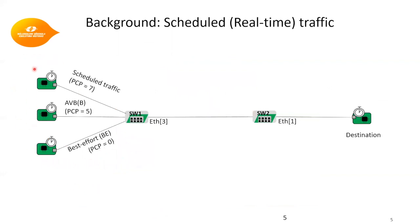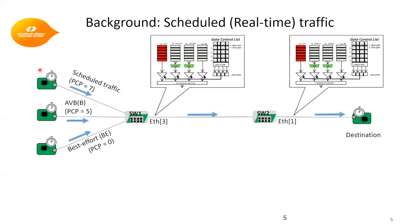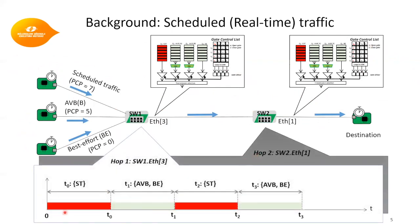In this example, we have three different streams of different priorities generated by separate traffic generators, routed through the same switches to the same destination. Port 3 of switch 1 and port 1 of switch 2 have the role of egress port, so we need to configure the gate control list at each of these ports to ensure sufficient bandwidth is allocated to scheduled traffic. As a conventional approach, we leave the remaining bandwidth to lower priority traffic: class AVB uses the credit-based shaper, and the rest is left for best-effort traffic.